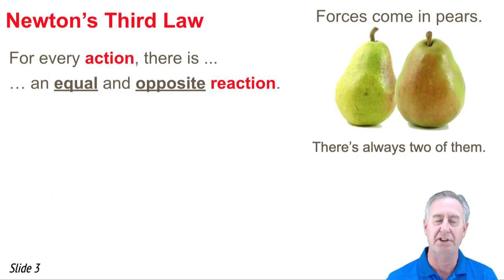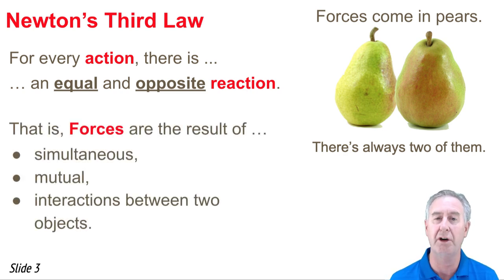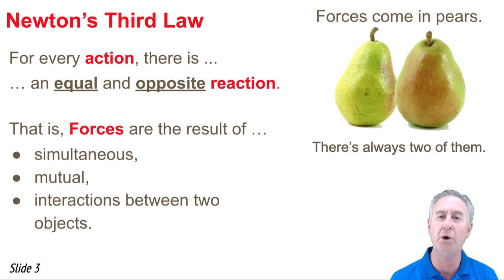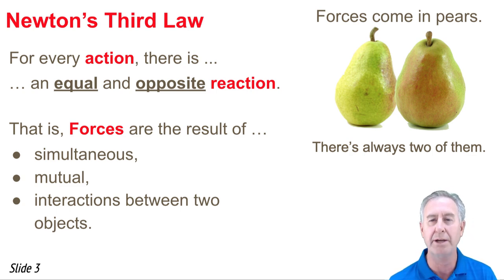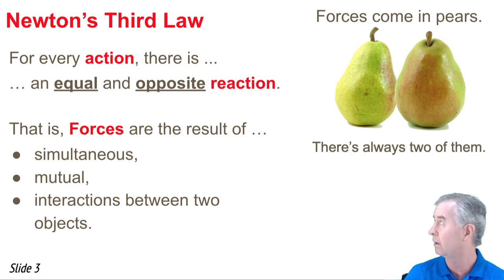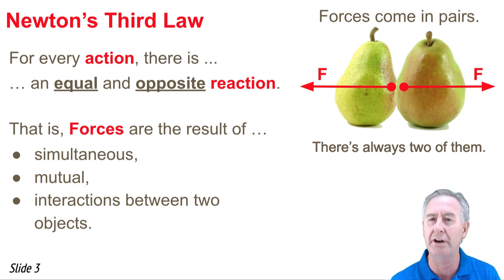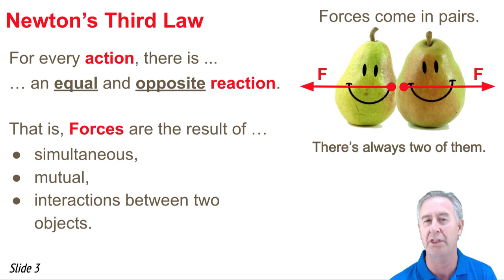Newton's Third Law states that for every action, there's an equal and opposite reaction. But it's not enough to know what Newton's Third Law states — you have to know what it means. What it means is that forces are the result of interactions between objects, that they act upon both of the interacting objects mutually and simultaneously. We sometimes say that forces come in pairs — there are always two forces acting among the interacting objects, acting equally in opposite directions.